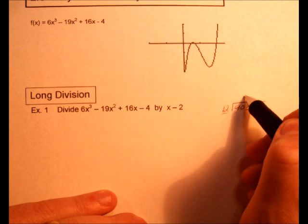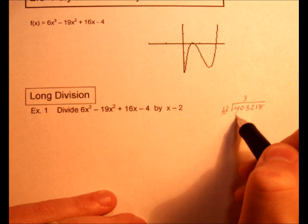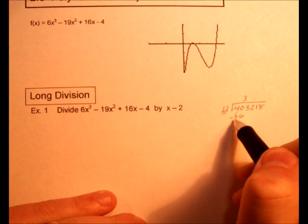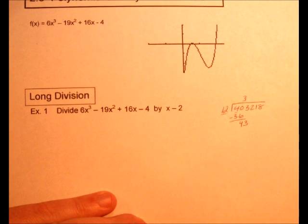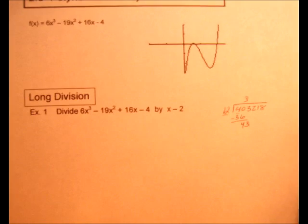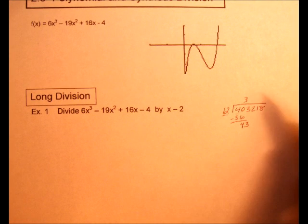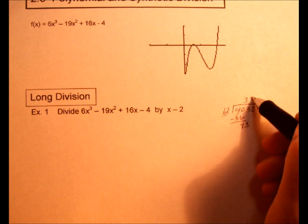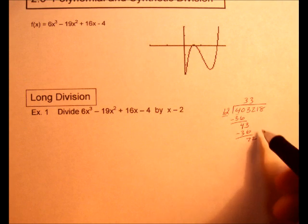12 goes into 40 three times, then we did 3 times 12 is 36, then you subtract those values and bring down the 3. And then we would go to the next one and do the exact same thing. 3 again, so 36, and you just repeat this process over and over again to get to the very end. And then you have a remainder.